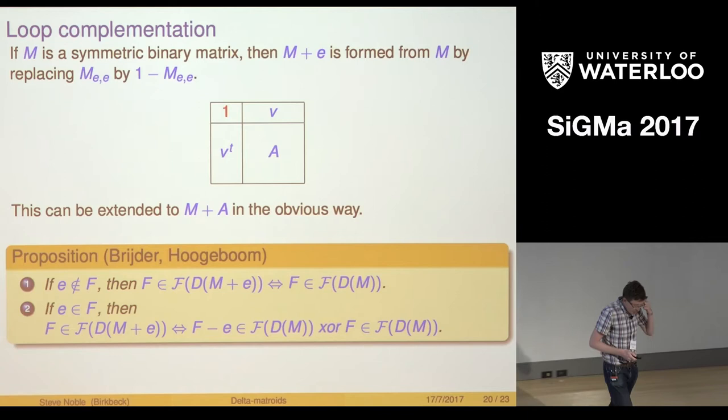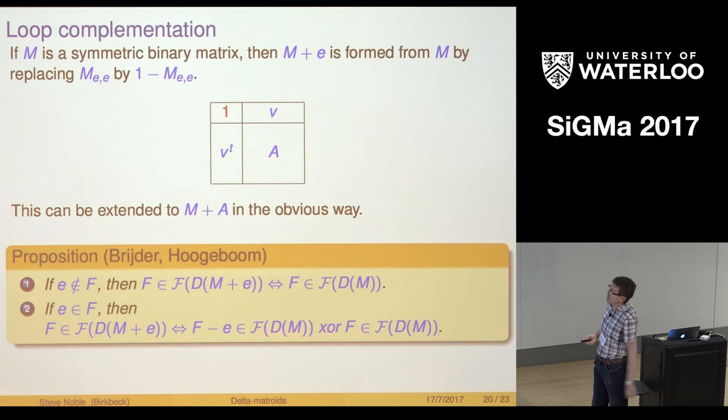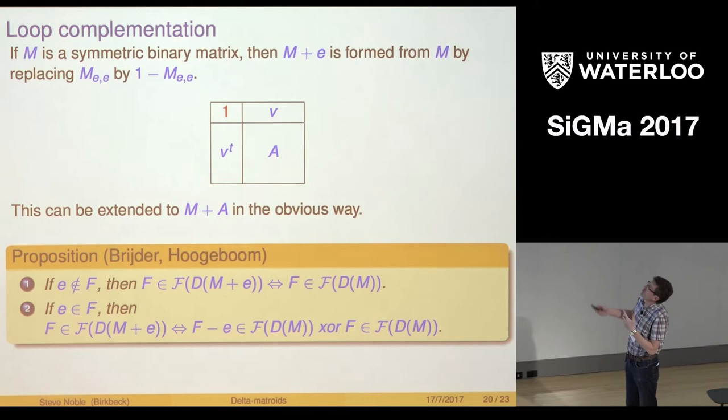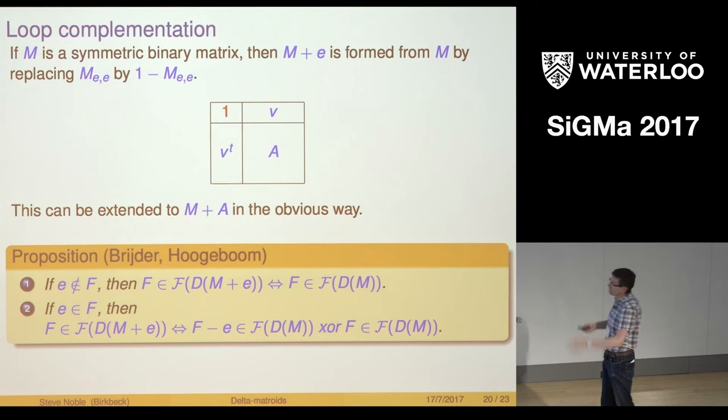Breder and Hudeboom were thinking about binary delta matroids and considering this operation. They were motivated by some problem in DNA sequencing or reconstruction. I don't remember exactly how that works, but they were very interested in this operation and they managed to show what this does to the delta matroid. Don't worry about what it actually says, but they were able to do that.